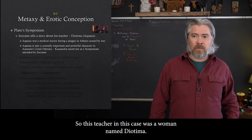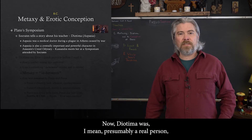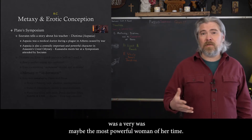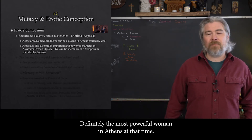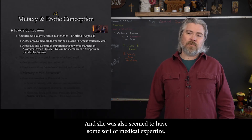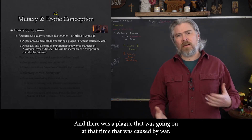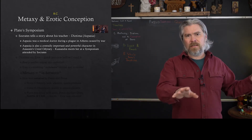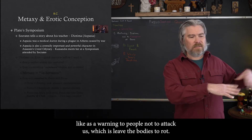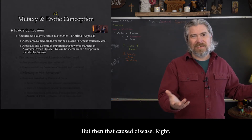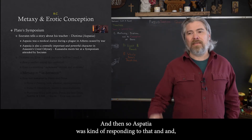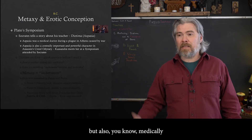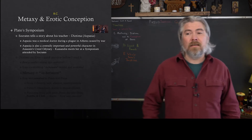His teacher in this case was a woman named Diotima. Diotima was presumably a real person, but could also be a nickname referring to another real woman of the time named Aspasia — maybe the most powerful woman in Athens at that time. She seemed to have some sort of medical expertise, and there was a plague going on caused by war. The ruler Pericles had said 'let's just leave the bodies out there as a warning,' but that caused disease and a plague broke out. Aspasia was responding to that, disturbed by it ethically, morally, and medically, and looking at how that ethical decision was causing the plague.